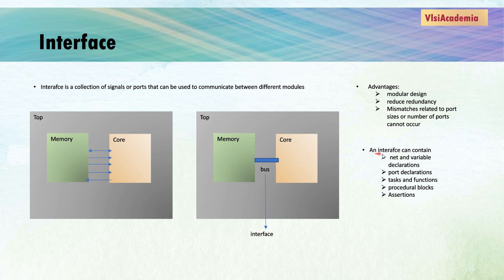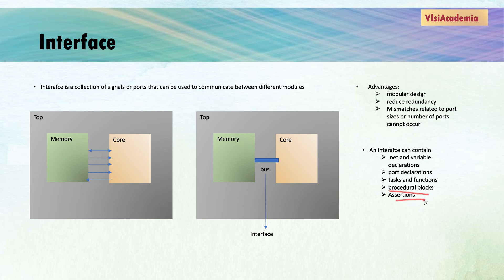Some features of an interface are that it can include net and variable declarations, port declarations, tasks and functions, procedural blocks, and assertions. That is the advantage of using an interface instead of using something like a struct. In a struct, all you can do is define net and variable declarations only. But in an interface, you can also define tasks, functions, procedural blocks, and assertions.